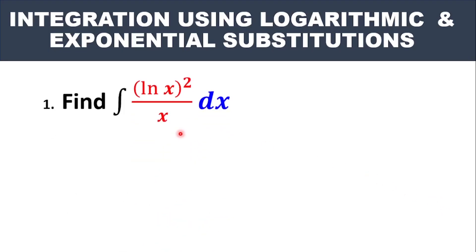Question 1 says: find the integral of (ln x)² over x, dx. This is where the choice of U is very important. Notice that if I pick x as U, then when I differentiate x I get 1, and that 1 cannot cancel this x. So picking x as U would be a wrong choice.